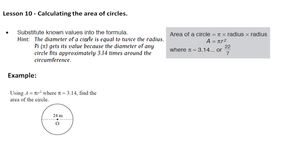The hint here is that the diameter of a circle is twice the radius. So if we need the radius and we've got the diameter, we must halve it.